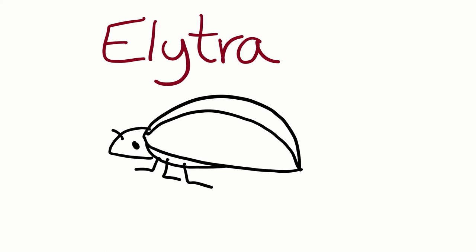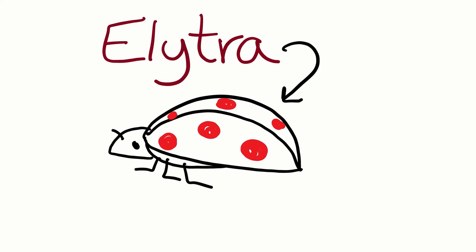Elytra are the hard forewings of beetles. These hard coverings protect both the body and the membranous wings underneath. Beetles can open their elytra and then fly with the membranous wings hidden.